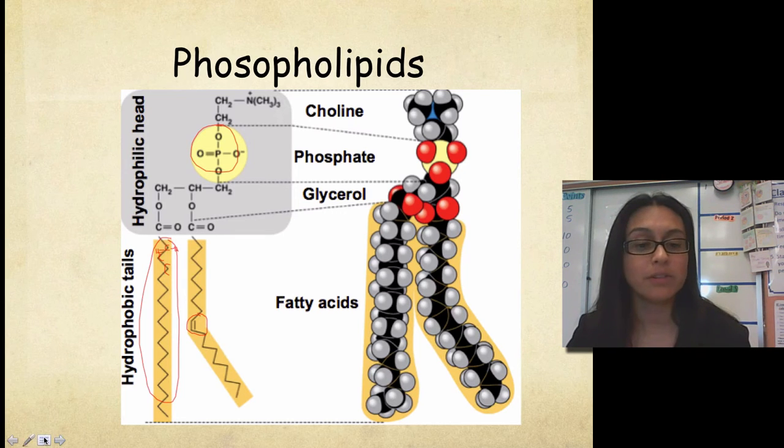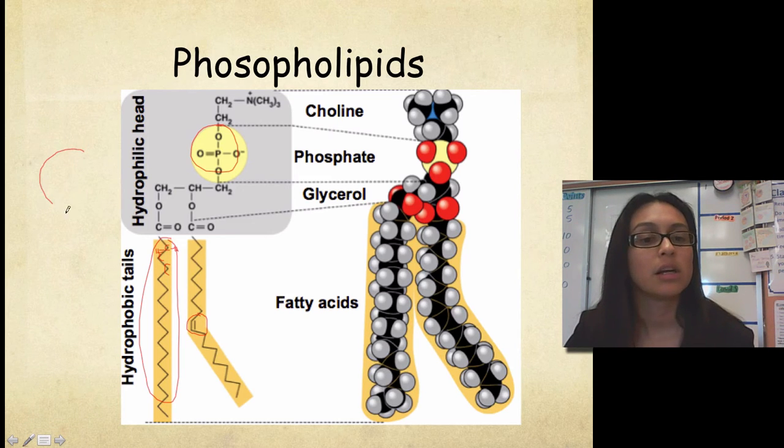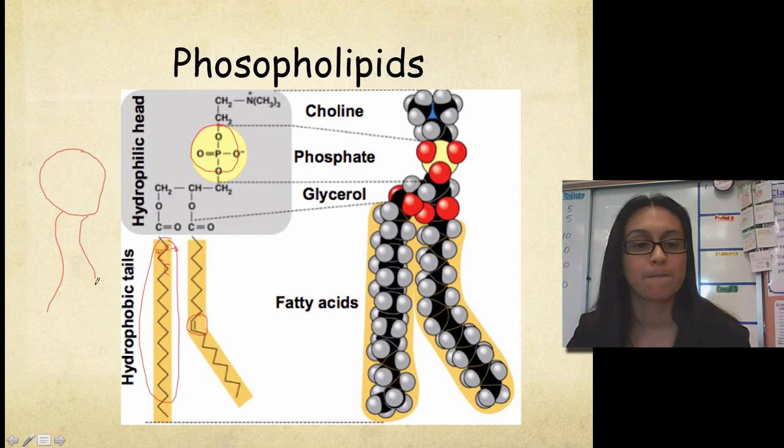So they're often drawn, and you probably remember this from ninth grade, they're often drawn like this, a circle with two tails. So that's usually how you'll see a phospholipid simplified. And the circle is going to represent this hydrophilic head that we see here, which includes the choline, the phosphate, and the glycerol.